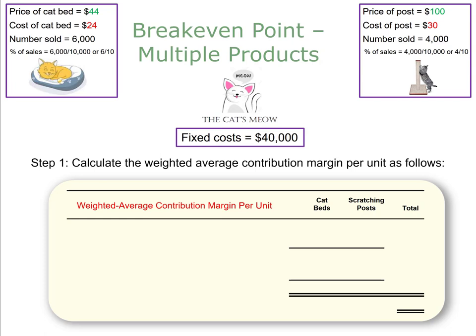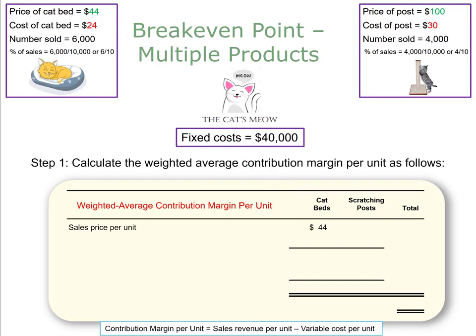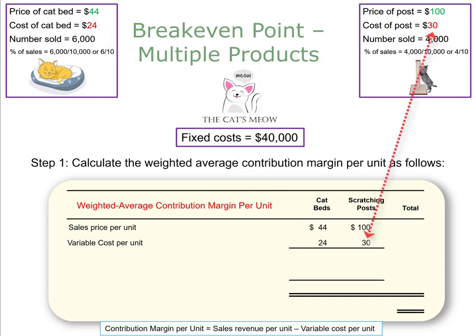Since we are calculating contribution margin per unit, the formula is sales revenue per unit minus variable cost per unit. For cat beds, the sales price is $44 and variable cost is $24, giving a contribution margin of $20 per bed. For scratching posts, the sales price is $100 and variable cost is $30, giving a contribution margin of $70 per post.